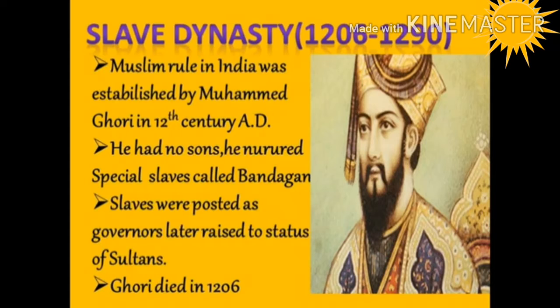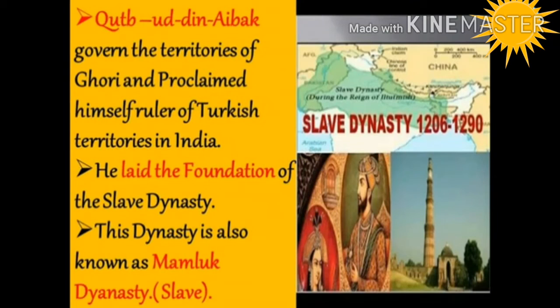Gauri died in 1206. After Gauri's death, one of his slaves, Qutbuddin Aibak, who had been left behind by Muhammad Gauri to govern the territories he had conquered, proclaimed himself ruler of Turkish territories in India. He laid the foundation of the Slave dynasty, also known as the Mamluk dynasty.